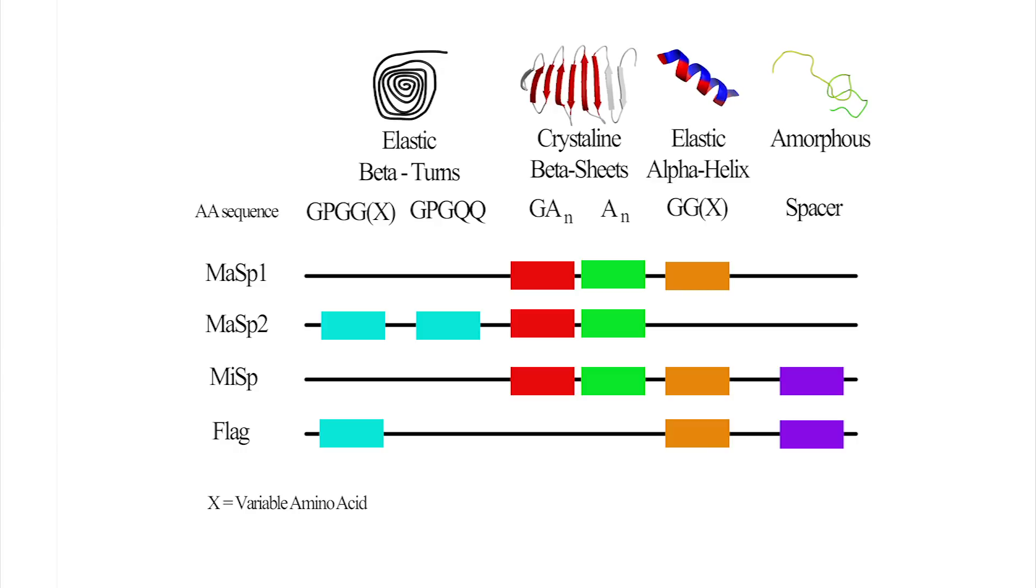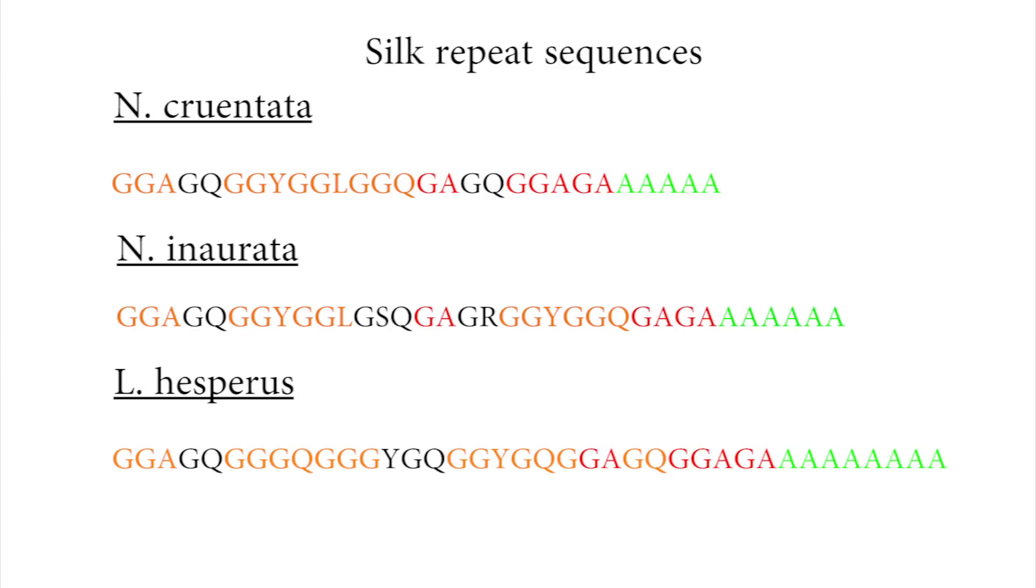Spiders mix and match these to make different parts of the web be strong or stretchy depending on what it needs. Every type of spider has its own unique silk, and so the exact genetic code and amino acid pattern is different, which is why some species' silk is stronger than others.